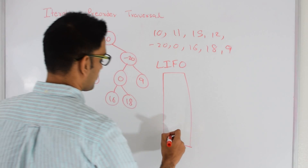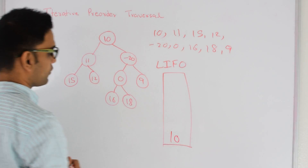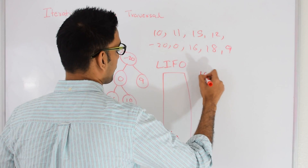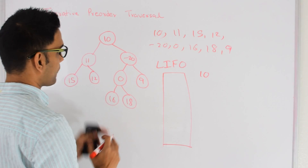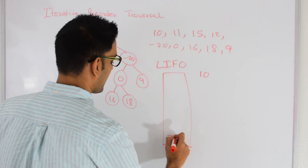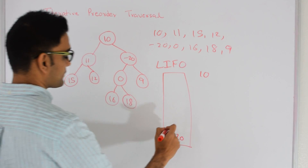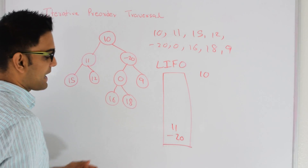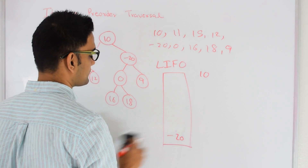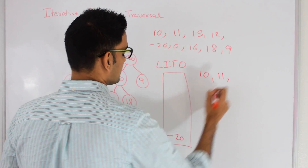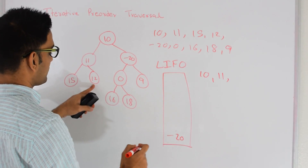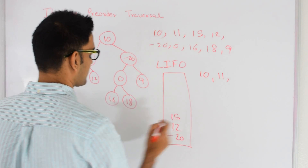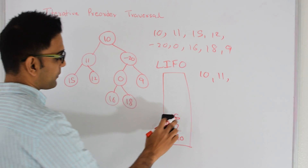First I'll put the root of this tree into the stack, so 10 goes into the stack. I pop 10 out of the stack, print it, and then if it has a right child I put that into the stack, and if it has a left child I put that into the stack. Now I pop out from the stack — 11 went in last, so it's first to come out.